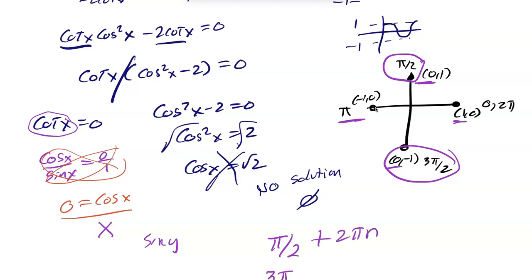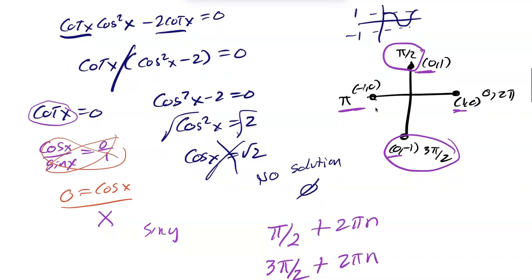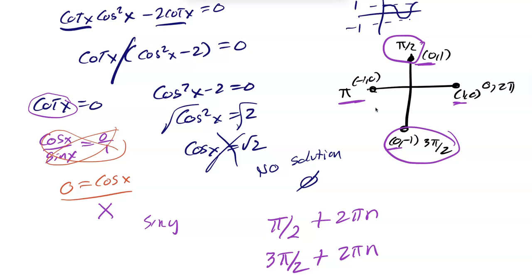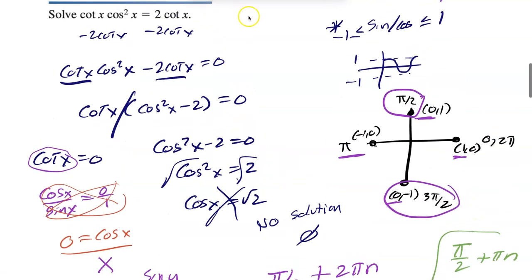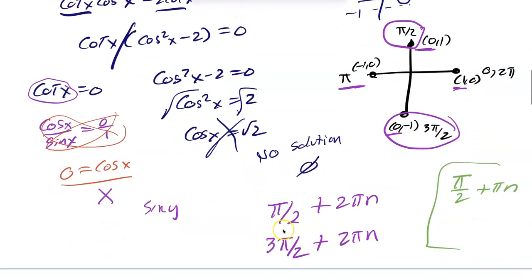If you want a shortcut, notice these two angles are on the same line — they're separated by exactly π. So you can write just π/2 + πn to capture all of them. Either form is correct. Anytime they don't give a domain, find your answers and add 2πn for the general solution.